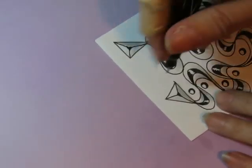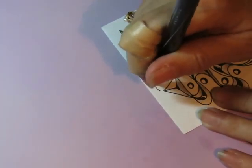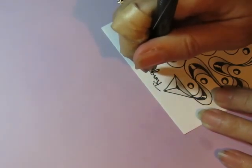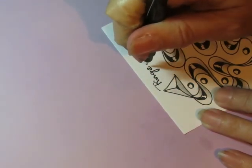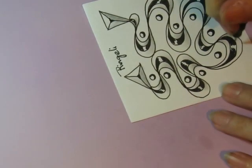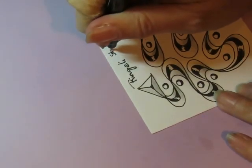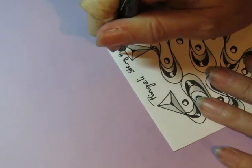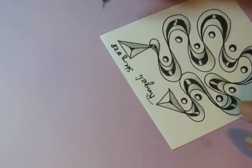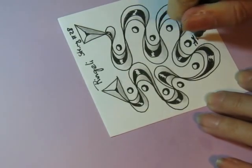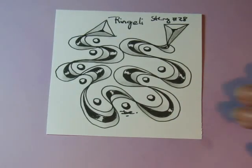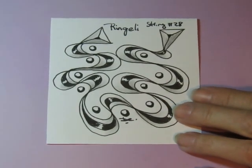I'm going to have it go this way. R-I-N-G-E-L-I. String number 28, right? Sign it. I used my fat pen so it looks different, but that's okay. Alright, so there we go. That ends that one for today.